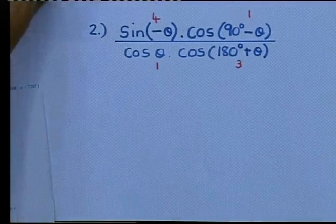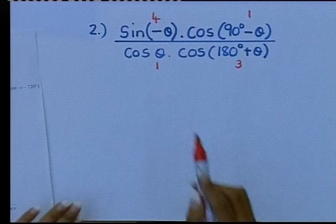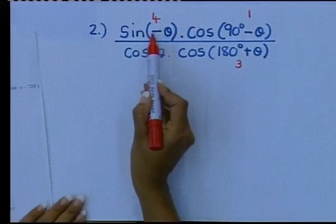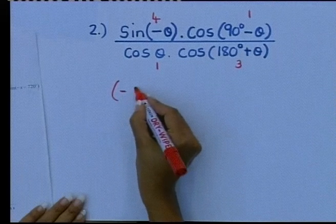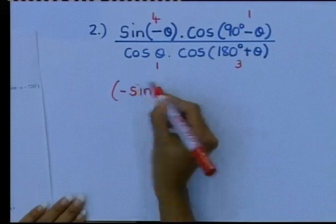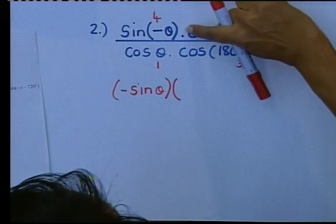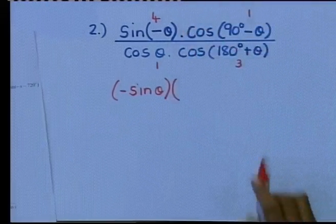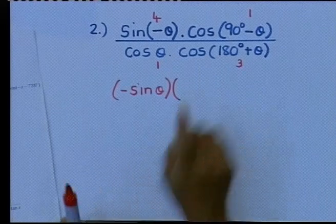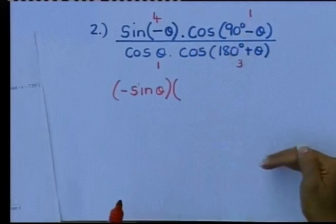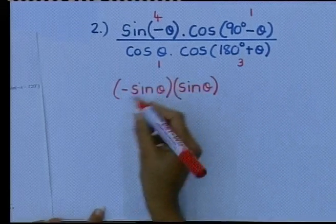Negative theta is in the fourth quadrant. How is sin in the fourth quadrant? Sin is negative. Does your name change? No — so this remains negative sin theta. Close your bracket and open a new one immediately, Grade 12, because you do not see a plus or minus sign separating these terms. 90 minus theta is in the first quadrant. How is cos in the first quadrant? It is positive. Does my name change? Yes — to sin theta.